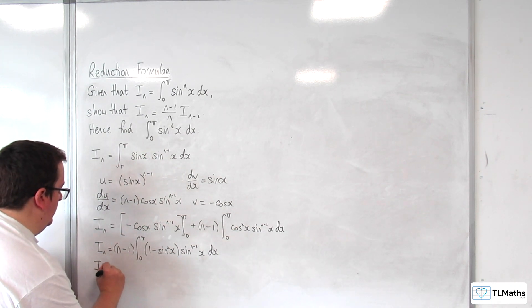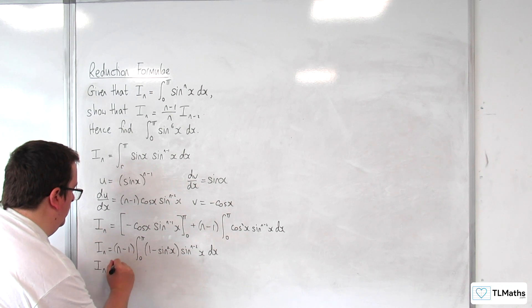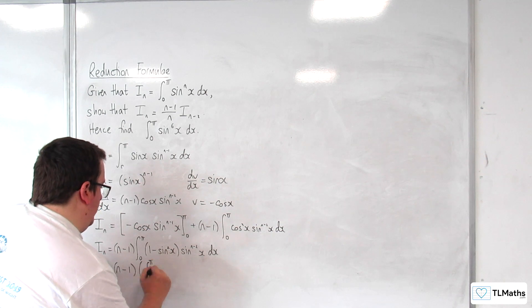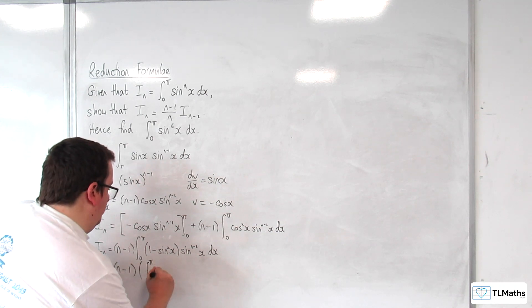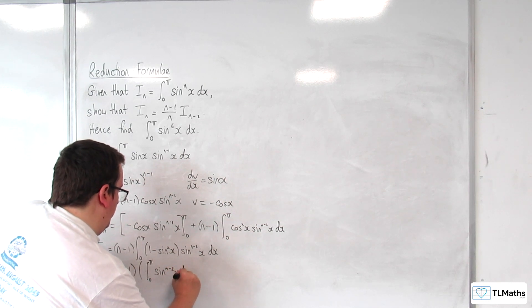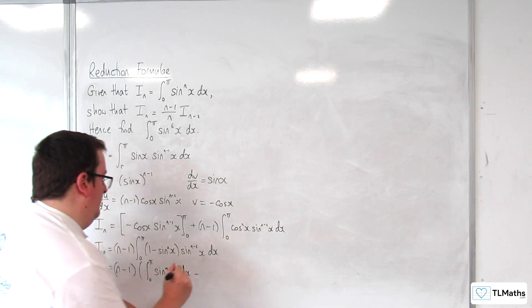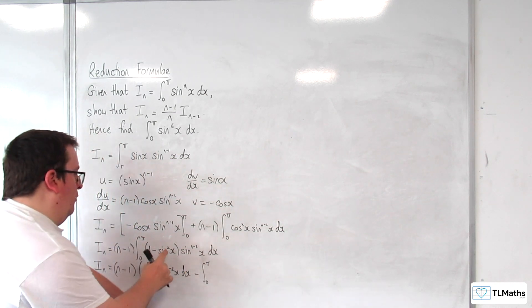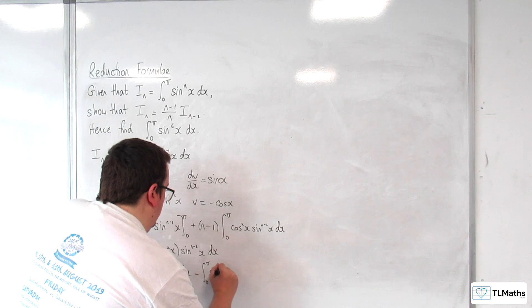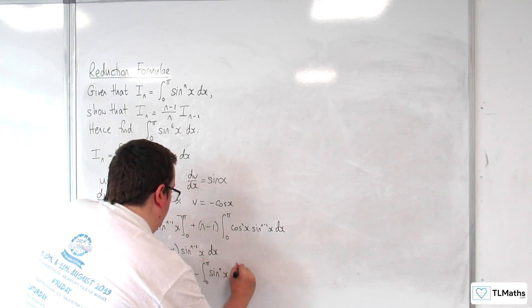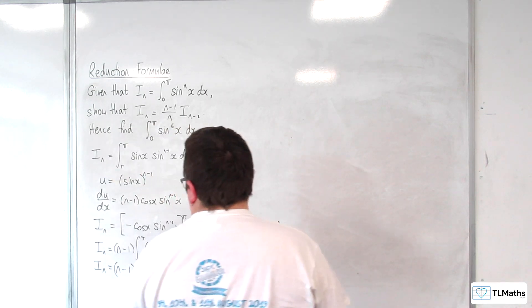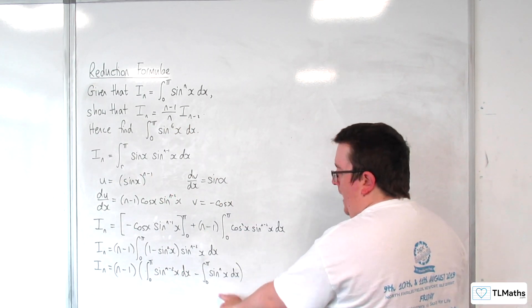And now I can multiply this out and write it as two separate integrals. So I_n equals (n-1) times the integral from 0 to π of sin^(n-2)(x) dx, take away the integral from 0 to π of sin²(x) times sin^(n-2)(x) dx, which is just sin^n(x) dx.